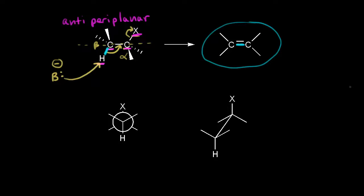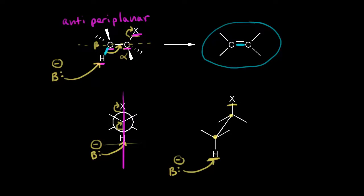If we're thinking about the stereoselectivity of an E2 mechanism, it can be helpful to look at this mechanism from a different point of view — for example, from a Newman projection. A base comes along and takes our beta proton, and these electrons would move in. At the same time, these electrons come off onto our halogen, and it's easier to see that all four atoms are in the same plane. Or from a sawhorse projection: our strong base takes our beta proton, the electrons move in to form our double bond, the electrons come off onto our halogen, giving us our alkene.